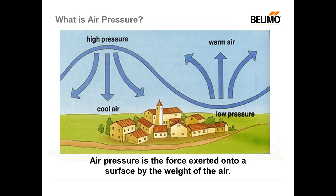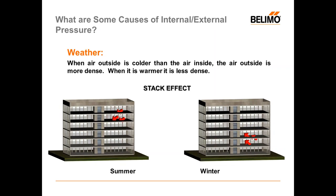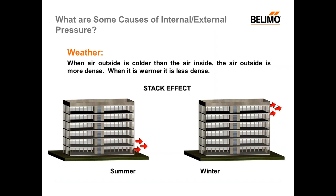Some of the causes of internal and external pressure: weather is a big factor. When weather outside is colder than the air inside, the air outside is more dense, therefore the pressure is greater. When it is warmer, it is less dense and less pressure. In the wintertime, you have cold, dense air at ground level, so your lower floors will face a higher external pressure. In the summertime, the opposite happens — less pressure on the external building and higher pressure internally.